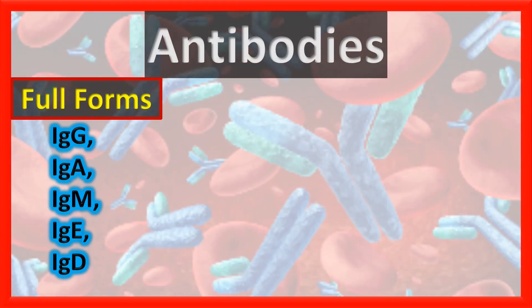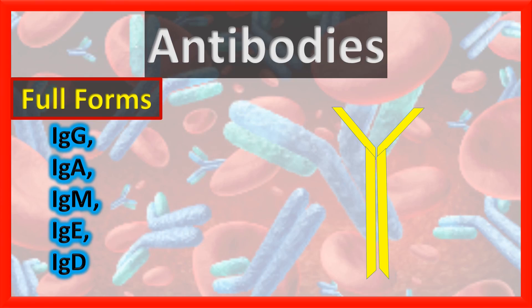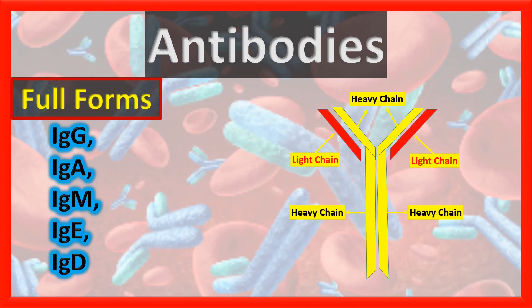Now let's have a look at the typical structure of an antibody molecule. An antibody molecule consists of 2 types of chains: heavy chains and light chains. On the basis of heavy chains there are 5 classes of antibodies. In each class, the light chains are variable and they are different for different antigens.